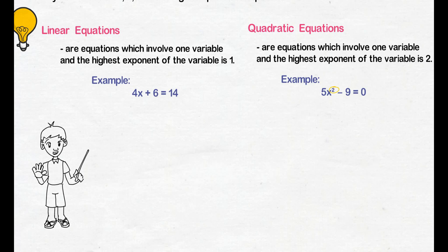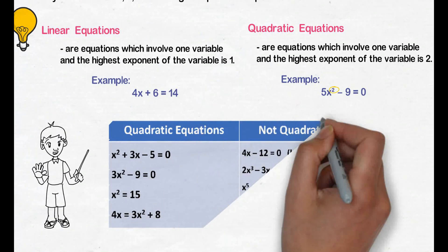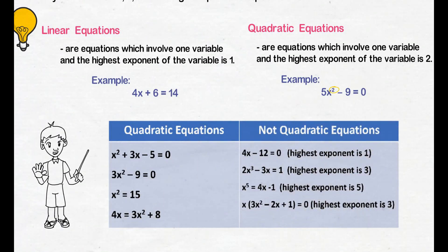To better understand the difference between quadratic equations and other equations, we will give examples of quadratic and not quadratic equations. In the table, we can see examples of each. Under quadratic equations, we have: x squared plus 3x minus 5 equals 0; 3x squared minus 9 equals 0; x squared equals 15; and 4x equals 3x squared plus 8. These are quadratic equations because they have one variable x and we can see the exponent 2.